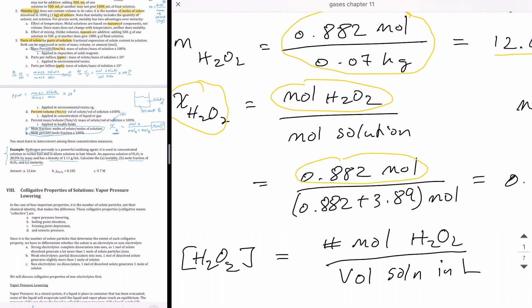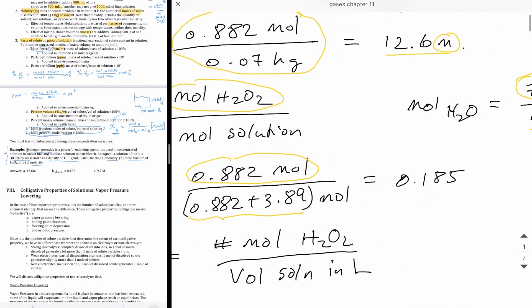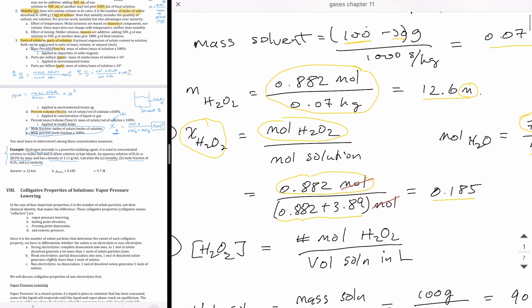This is the number of moles of H2O2. And then at the bottom here is the sum of the number of moles of H2O2 and the number of moles of water. And that gives me 0.185. Notice that mole fraction is a unitless quantity because the moles cancel away. So it doesn't have any unit and you can convert this to percentage. At that point, it will be called mole percent. And it's just 18.5%.